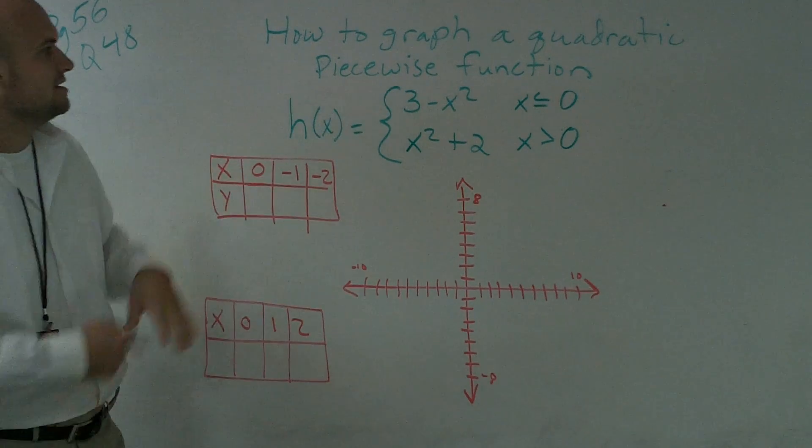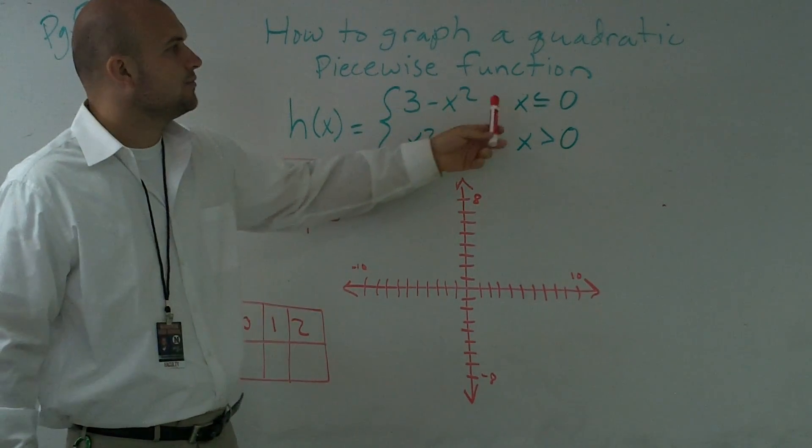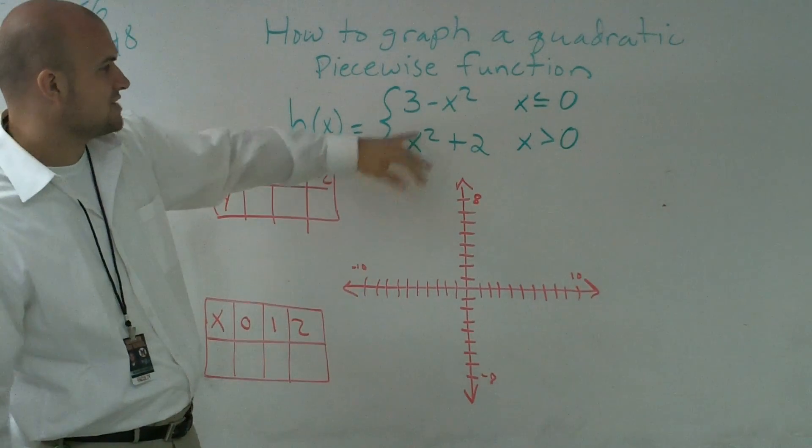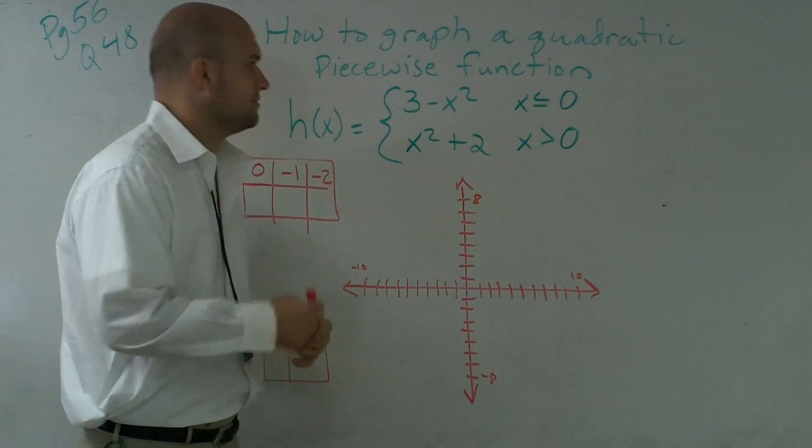My function is h of x, where I have 3 minus x squared, when x is less than or equal to 0. And my other part is x squared plus 2, with my constraint of x is greater than 0.